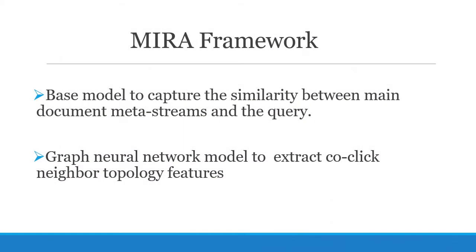We formally propose our encoding model MIRA based on neural networks and graph convolution networks with a two-factor attention mechanism, which follows the Siamese architecture to independently derive query and document embedding. The Siamese base model captures the similarity between main document meta streams and the query, and the graph neural network model extracts co-click neighbor topology features.